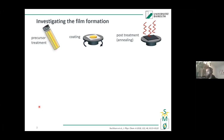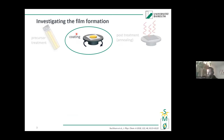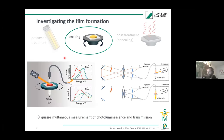Talking about film formation, there are many aspects to consider: precursor treatment, the coating itself — for example spin coating — and post-treatment like thermal annealing. We focus today on the coating itself, especially spin coating, monitored with optical in-situ spectroscopy. Simplified, we have our spin coater, a white light source, and a laser, enabling us to record absorption and photoluminescence during spin coating at about 11 Hz.